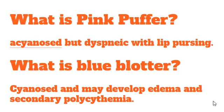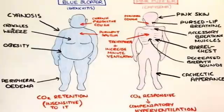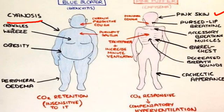Another frequently asked question: what is pink puffer and what is blue bloater? Pink puffer — the patient is acyanosed but dyspneic with lip pursing. In case of blue bloater, the patient is cyanosed, may have edema, and may also have secondary polycythemia. In blue bloater, chronic cough is the main complaint, dyspnea is not that prominent, and the patient will have edema causing body swelling. But in case of pink puffer, the patient is pink because there is no cyanosis, has pursed lip breathing, dyspnea is the main complaint, cough is not that prominent, and the patient is most often lean and thin.